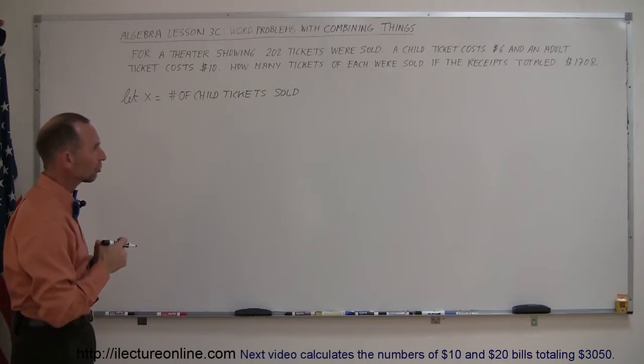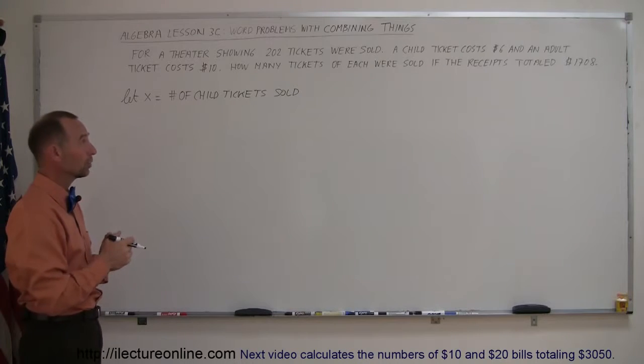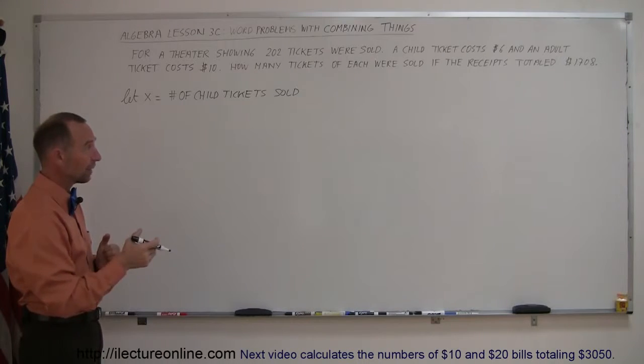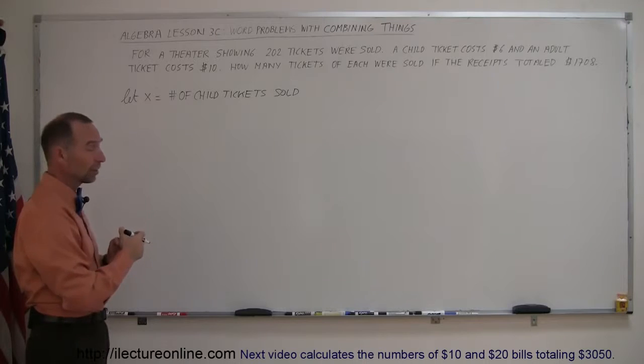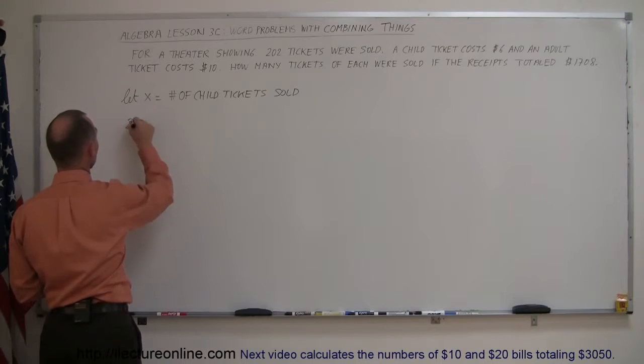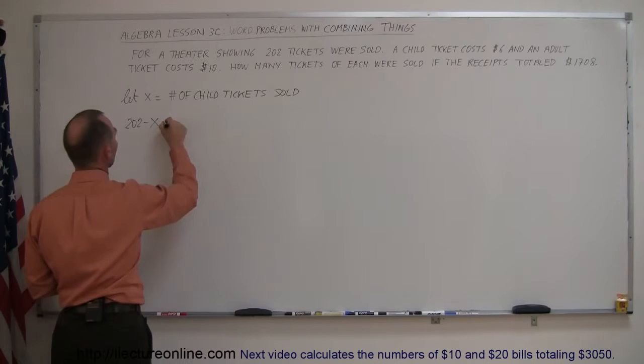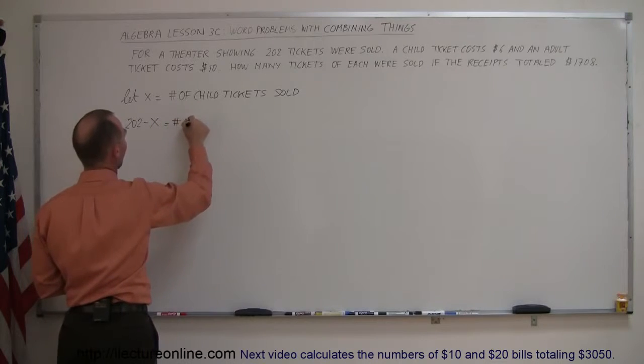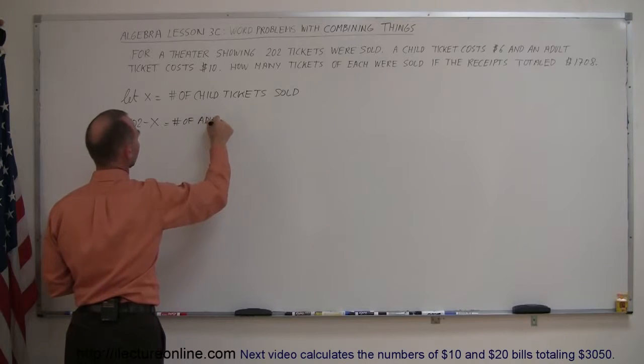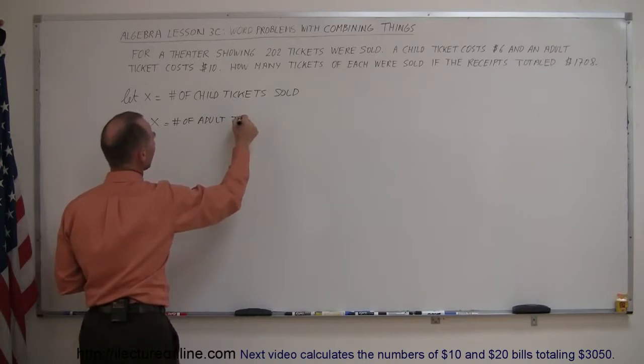Then, how do we express the number of adult tickets sold? Well, they tell us that there were a total of 202 tickets, so if we subtract from that the number of children tickets, we end up with the number of adult tickets. So, the total, 202 minus the amount sold for children equals the number of adult tickets sold.